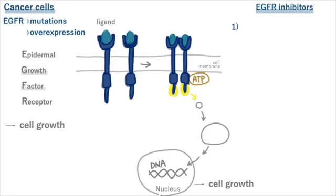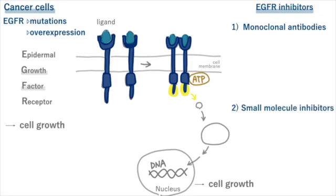EGFR inhibitors are categorized into two main classes. The first class includes monoclonal antibodies, while the second class comprises small molecule inhibitors.